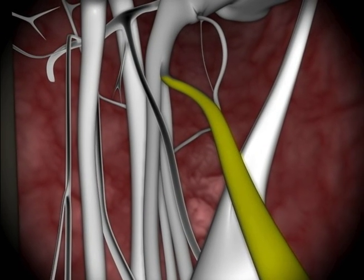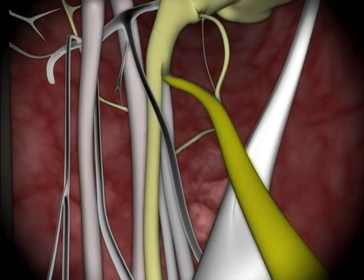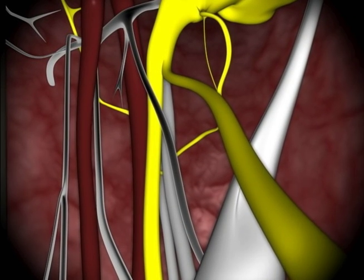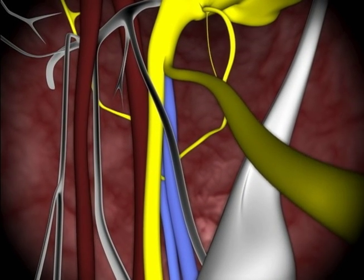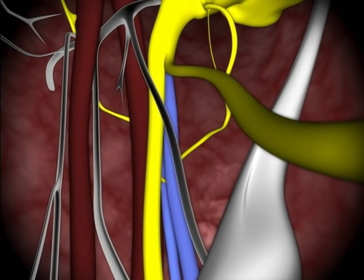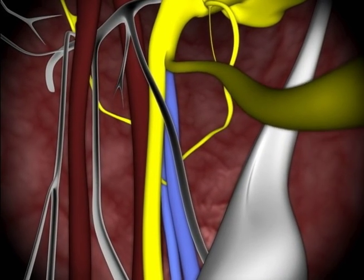We're just about there. Notice that we are approaching just above the lingual, and the inferior alveolar neurovascular bundle can be visualized.